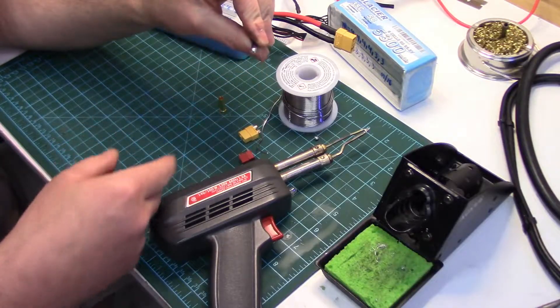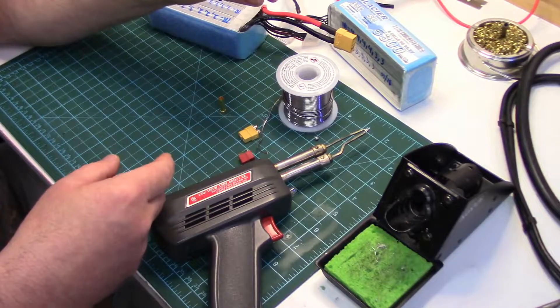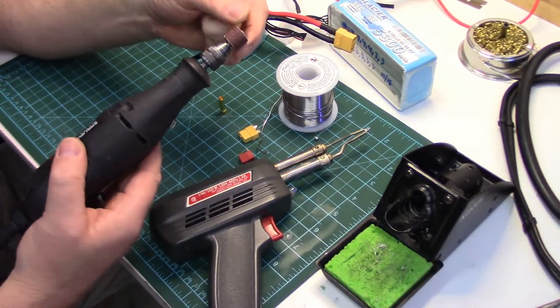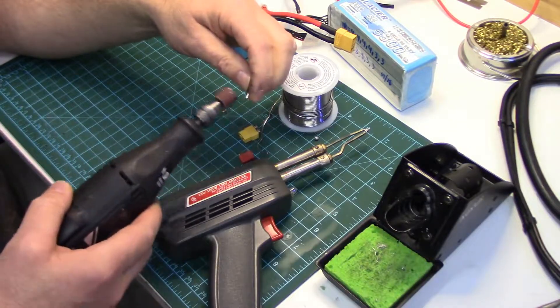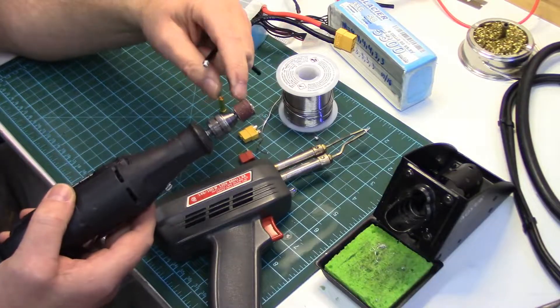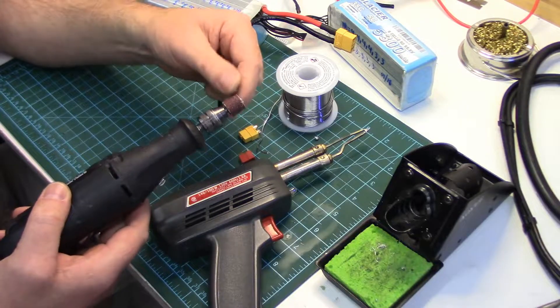So that's just another little tip I use. Use a sanding drum because if you use like a grinding stone, solder is very soft. It'll plug the stone right up, whereas it won't plug a sanding drum.